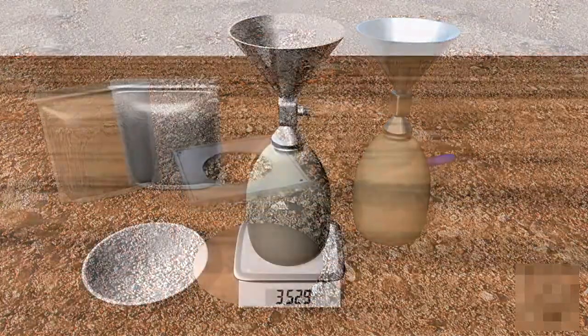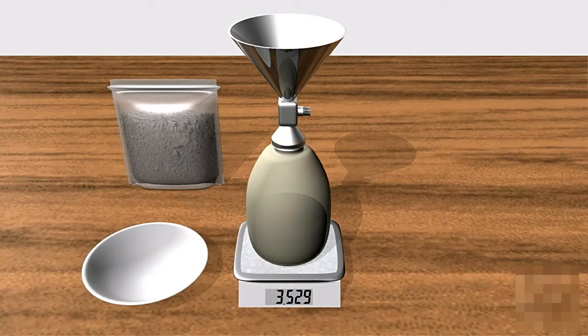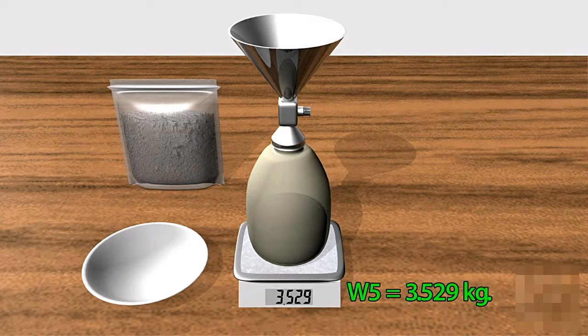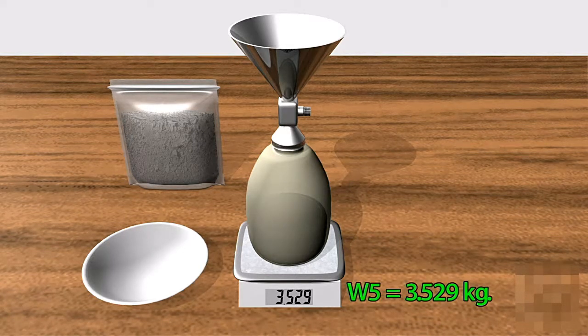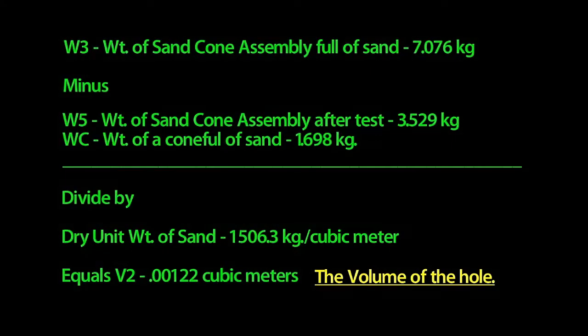Back in the lab we now weigh the complete assembly again. The weight is 3.529 kilograms, this is what we will call W5. If we take W3, the weight of a full sand cone assembly, and subtract W5 and WC and divide it by the dry unit weight of the sand, we get the volume of the hole which is approximately 0.00122 cubic meters. We'll call this figure V2.